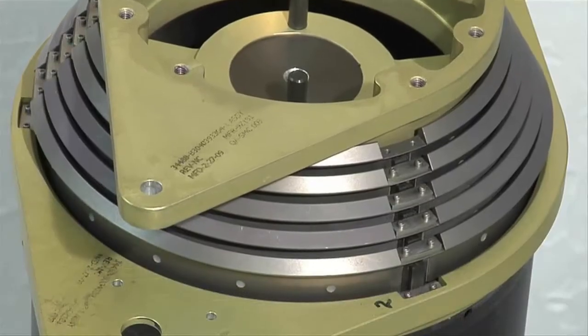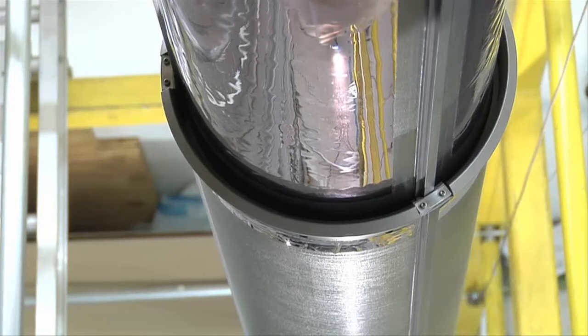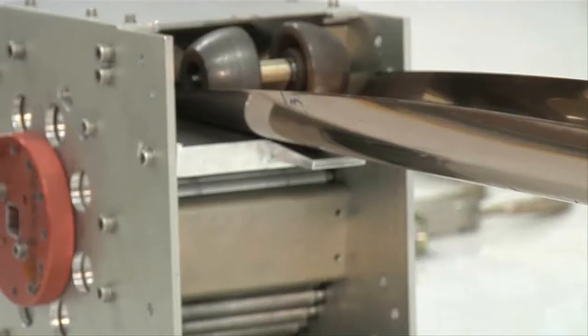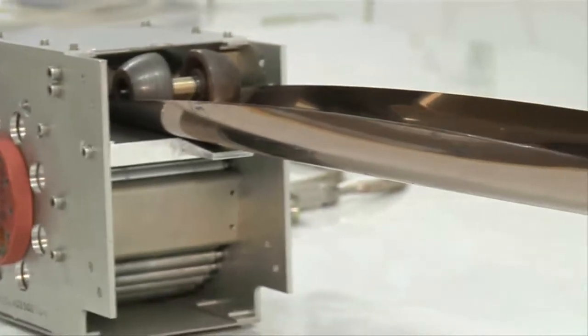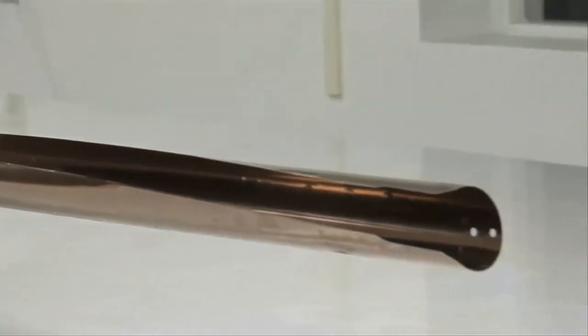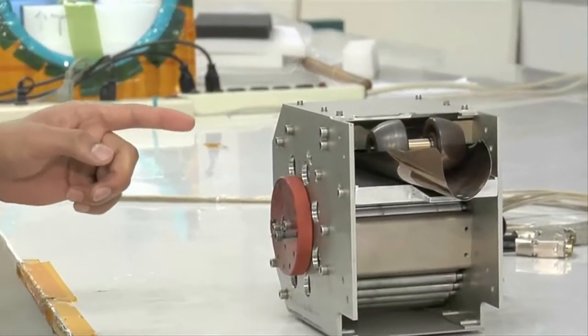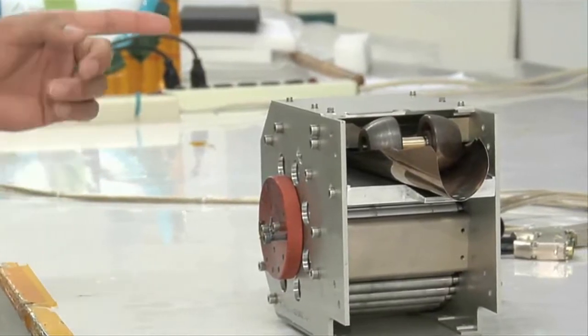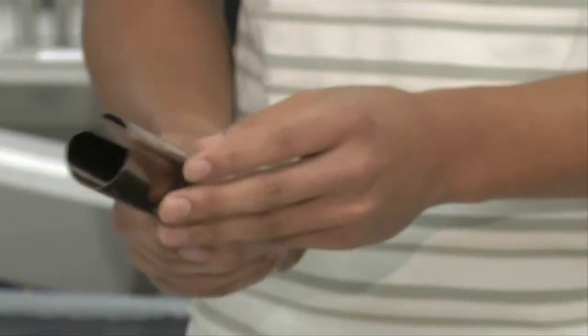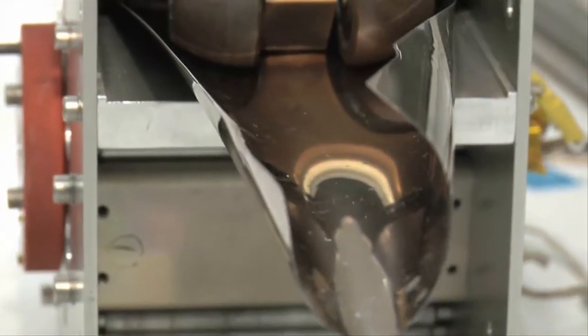The boom deploys much like a telescoping radio antenna and is powered by a device called a stem dispenser. The stem deployer extrudes a steel material, much like a tape measure, that is stowed flat but curves into a tube-like structure when extruded. The material is very light but strong and can be retracted into the dispenser as well.